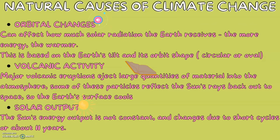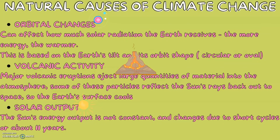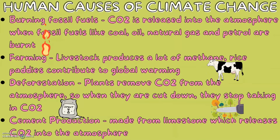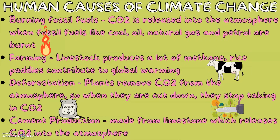Solar output. The Sun's energy output is not constant — it changes due to short cycles of about 11 years. Now let's look at human causes of climate change. Burning fossil fuels: carbon dioxide is released into the atmosphere when fossil fuels like coal, oil, natural gas, and petrol are burnt.